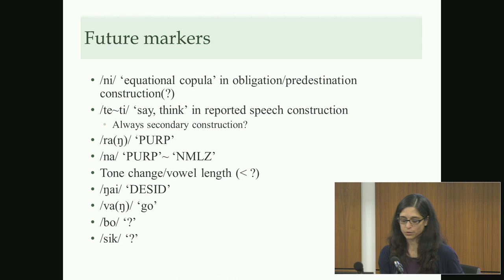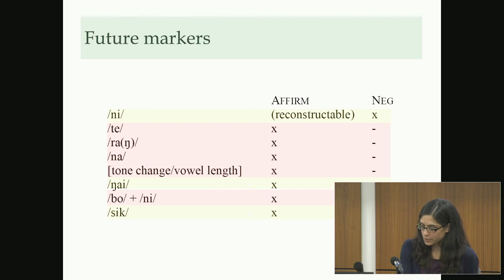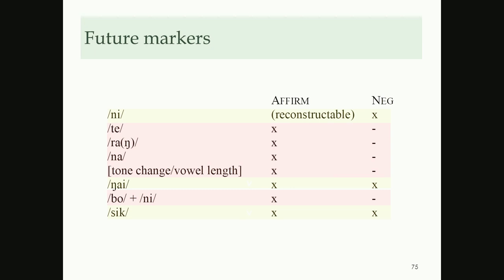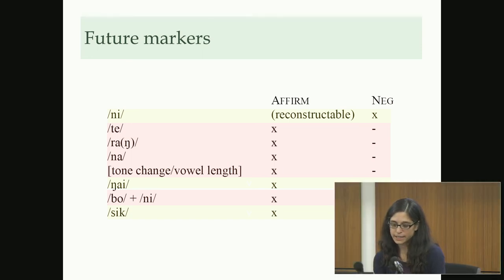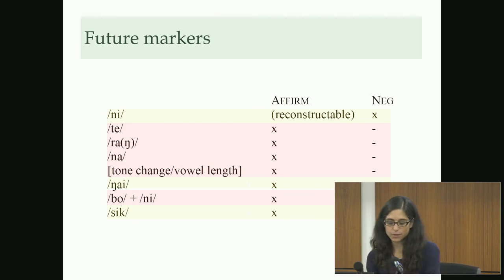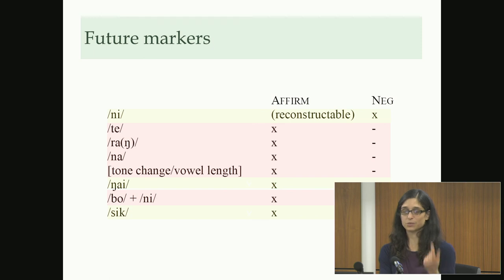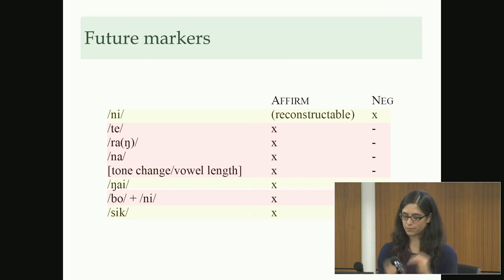Looking at forms by polarity: ni is the primary form for negative future; ngai and sig only occur in negative future paradigms in transitive verbs — quite limited. Otherwise all this variation of forms is only found with affirmative future constructions. Affirmative future typically has multiple constructions expressing different degrees of certainty, likelihood, or temporal proximity; non-paradigmaticity where different person forms follow different constructions; and sometimes transitive and intransitive verbs follow different constructions.